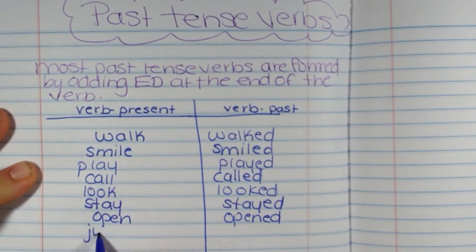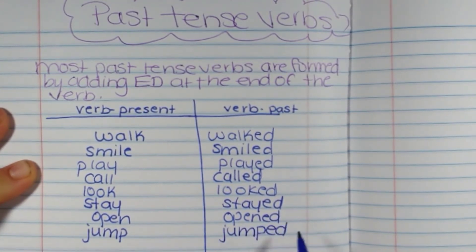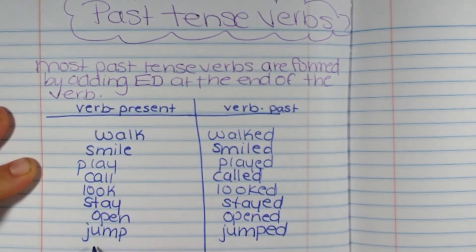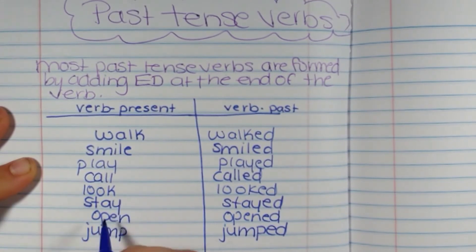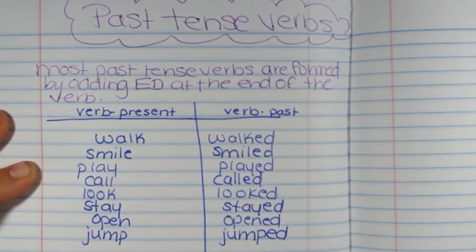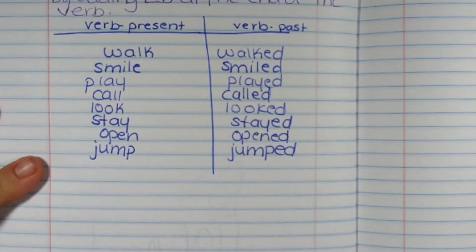Open goes to opened. Jump goes to jumped. So those are regular forms. Sometimes we have irregulars.